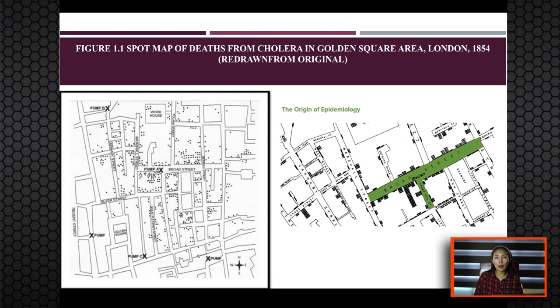Combining all his observations, Snow came to the firm conclusion that the source of infection was the water from Pump A. He reported his findings to municipal officials, who responded by removing the handle of the pump, and that ended the outbreak.